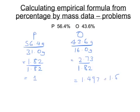Now, again, we're not getting two whole numbers, but we can clearly see that this 1.5 to 1 ratio is the same as saying a ratio of 2 to 3. So here the formula is P2O3 as an empirical formula to the simplest whole number ratio.